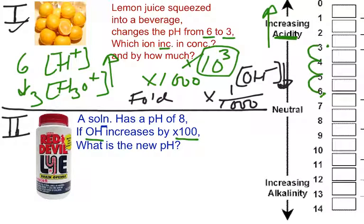In this particular problem, we are given a base, lye, which is a famous base. And we're told that we're starting out at pH of 8. So, we're providing more and more OH-. We're increasing the pH by times 100.